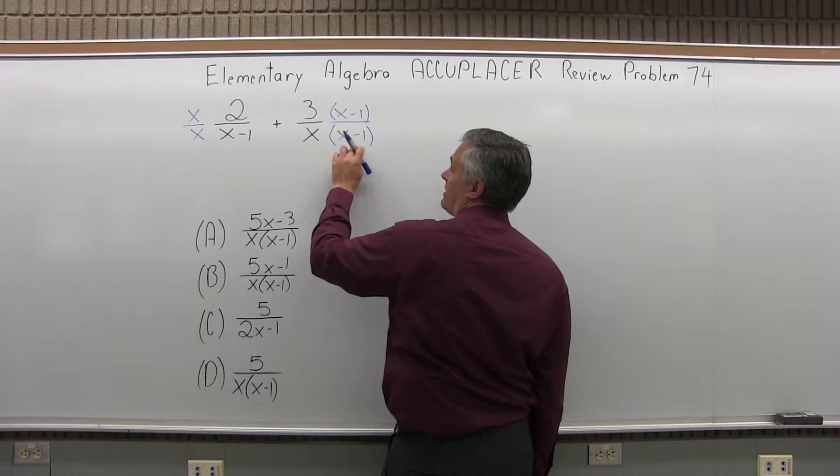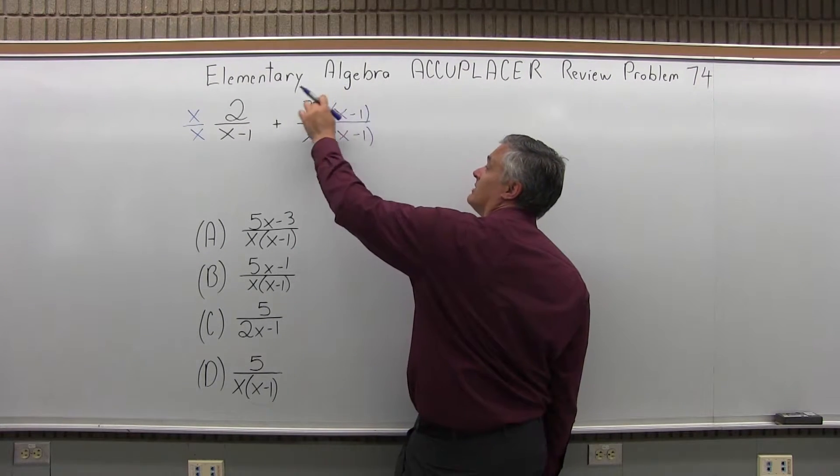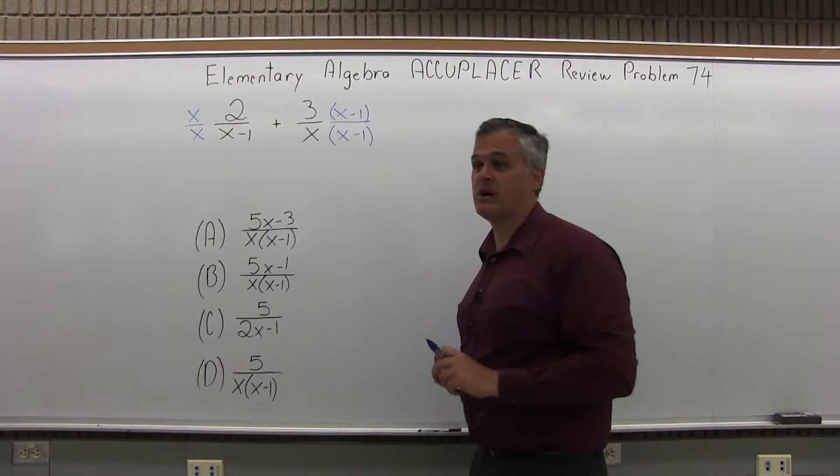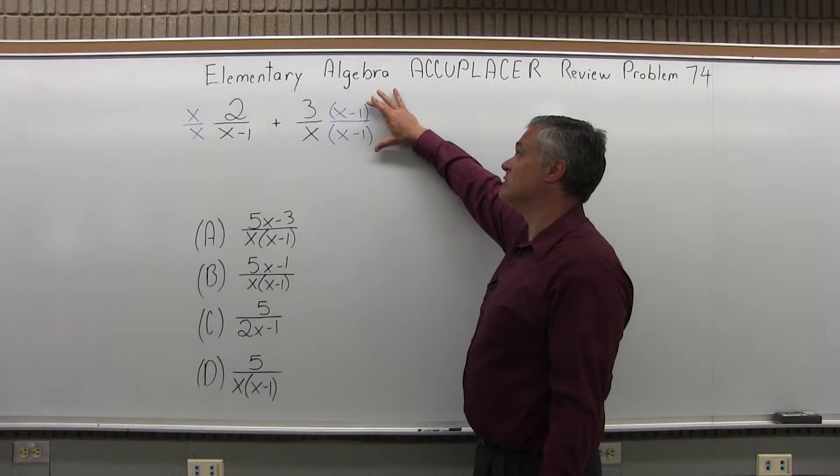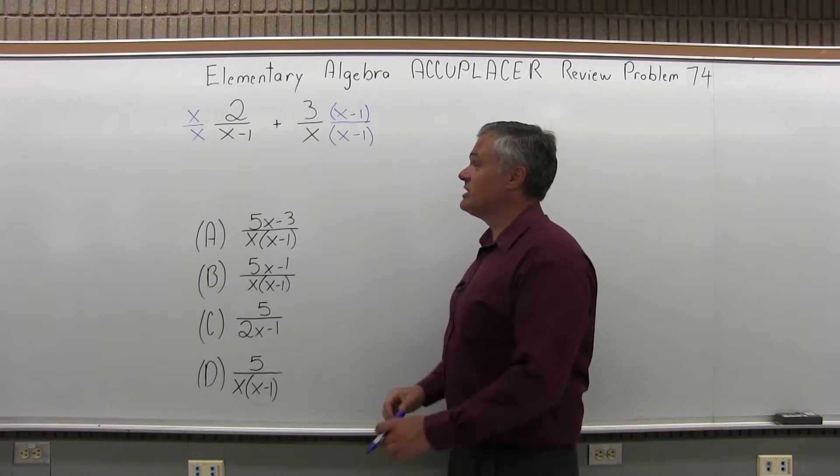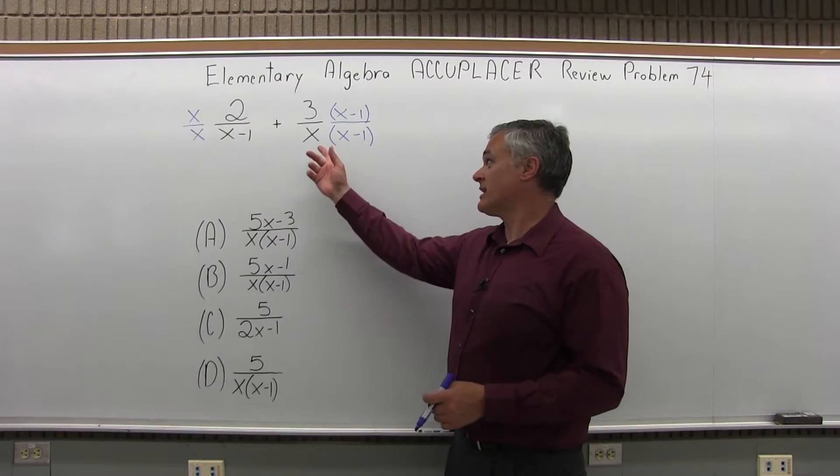Again, if I multiply the bottom times x minus 1, I need to multiply the top also times x minus 1. And that way I'm just multiplying times 1. So I'm not changing the value of the second fraction, just changing what it looks like.